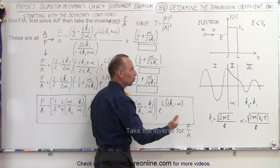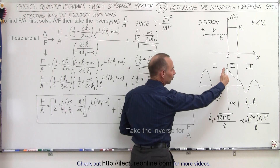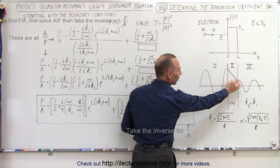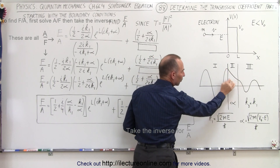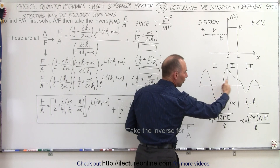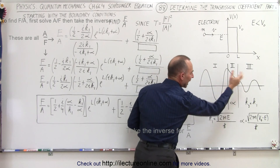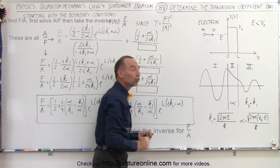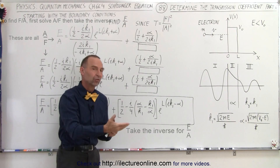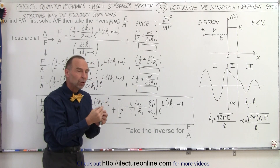That depends on the equation describing what happens before you hit the barrier — region one — the equation describing what happens when the particle goes through the barrier, and the equation describing when the particle is past the barrier. For each, we have a Schrödinger equation.